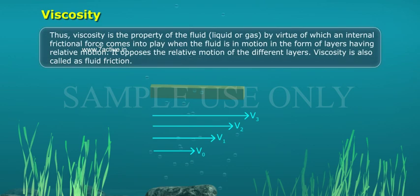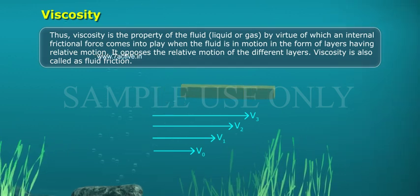Thus, viscosity is a property of fluid — liquid or gas — by virtue of which an internal frictional force comes into play when the fluid is in motion in the form of layers having relative motion. It opposes the relative motion of the different layers. Viscosity is also called fluid friction.